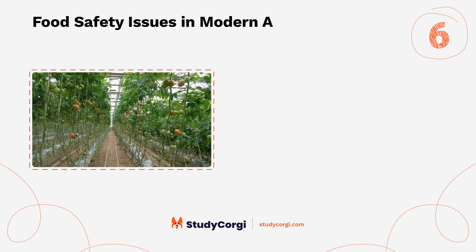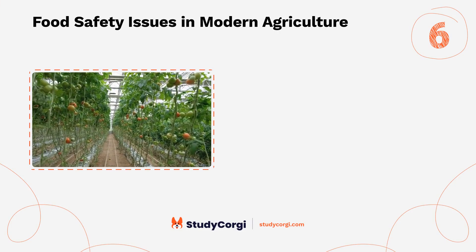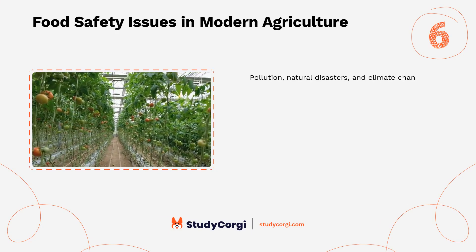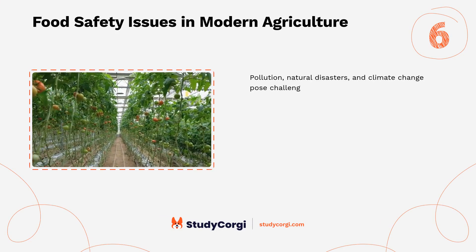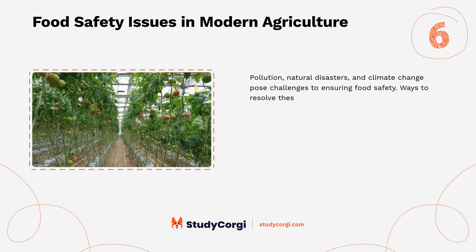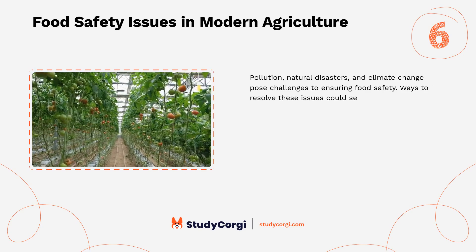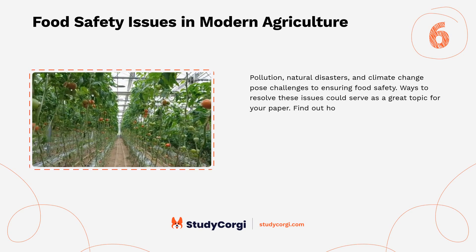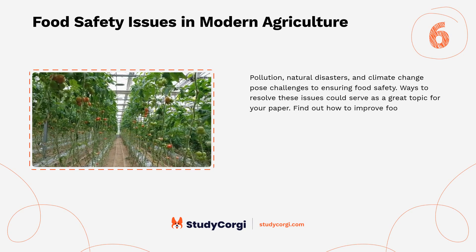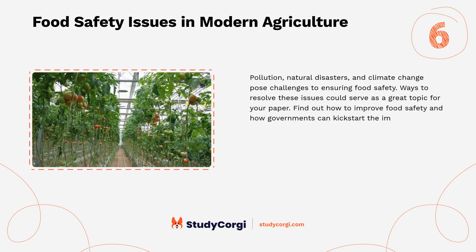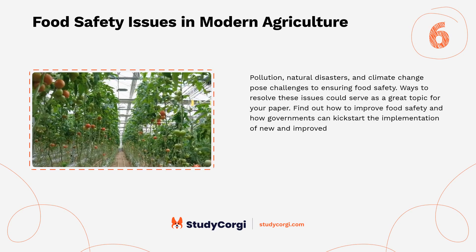Food safety issues in modern agriculture. Pollution, natural disasters, and climate change pose challenges to ensuring food safety. Ways to resolve these issues could serve as a great topic for your paper. Find out how to improve food safety and how governments can kick-start the implementation of new and improved standards.